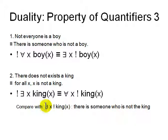There exists x, not x king. There is someone who is not a king. This is not the same as the previous sentence.